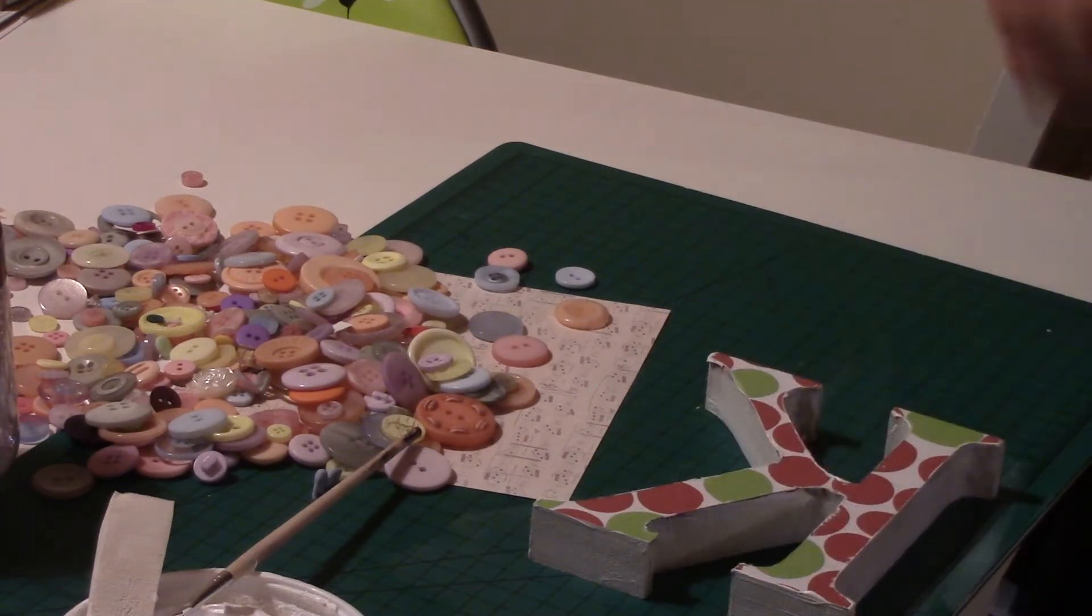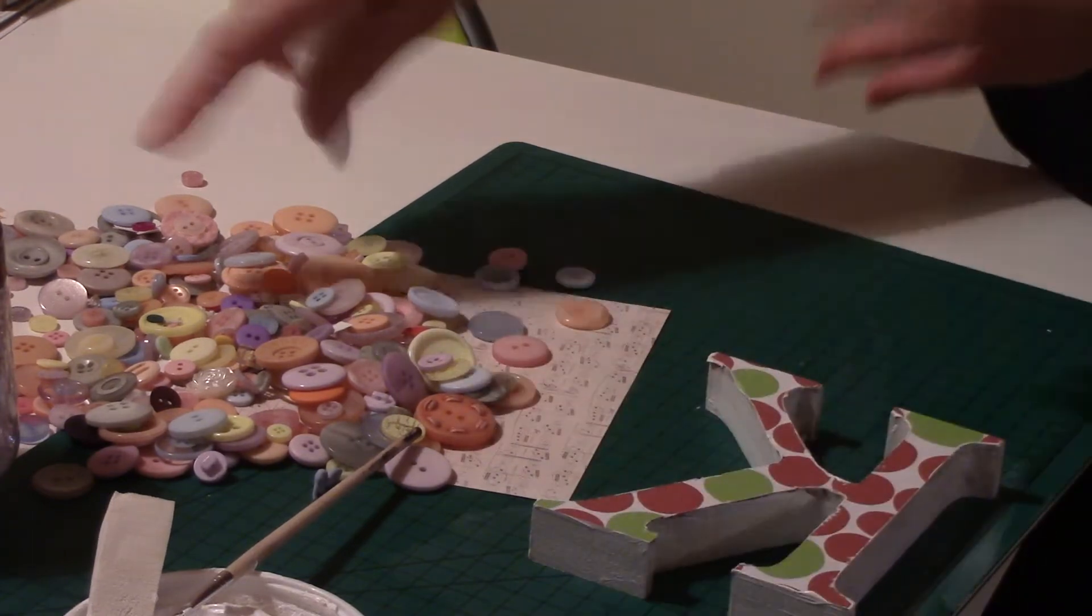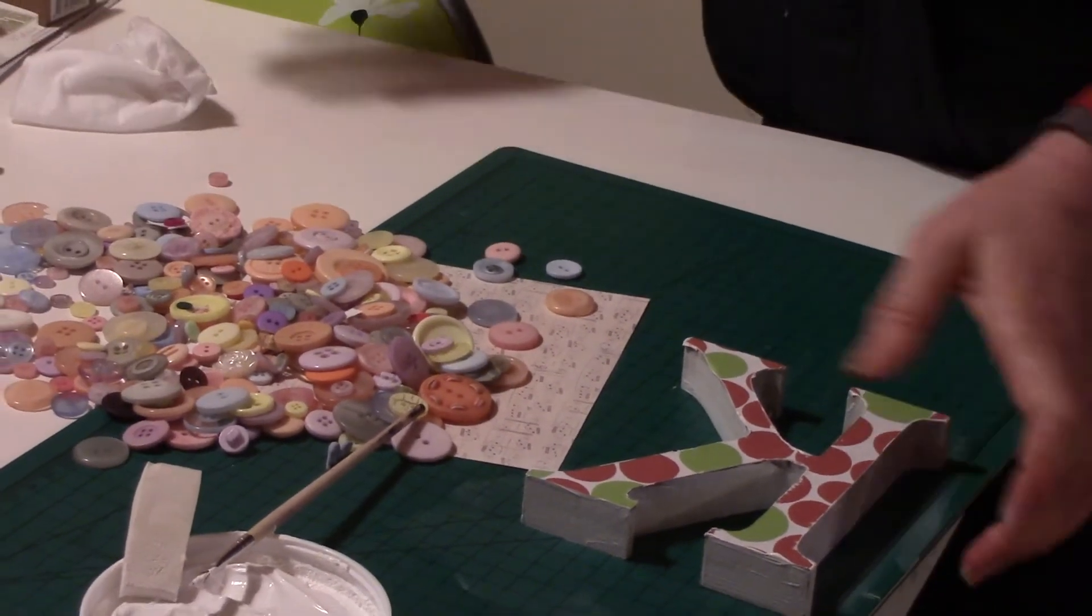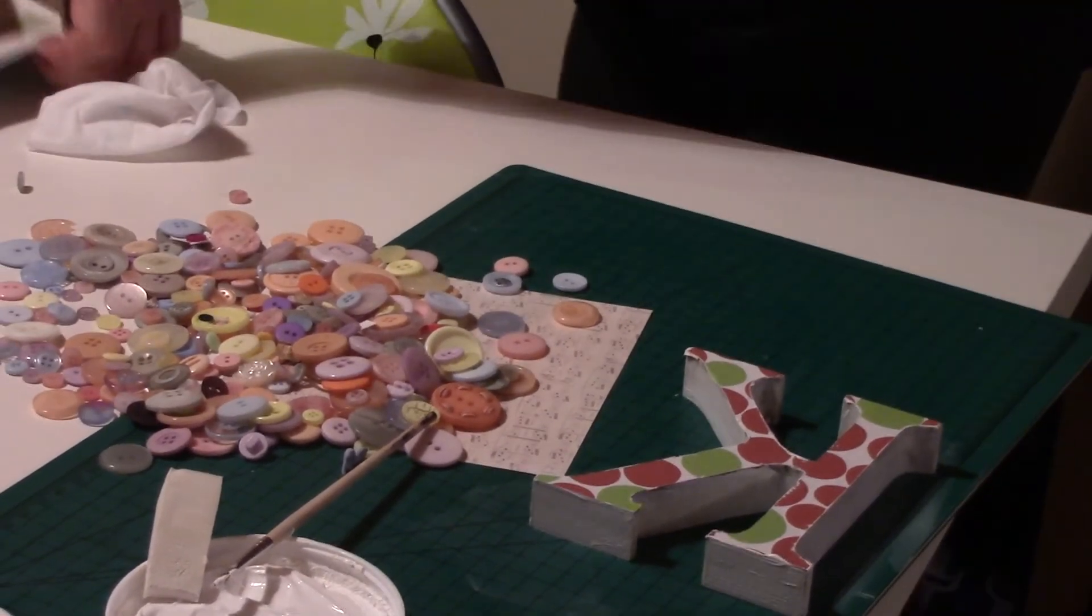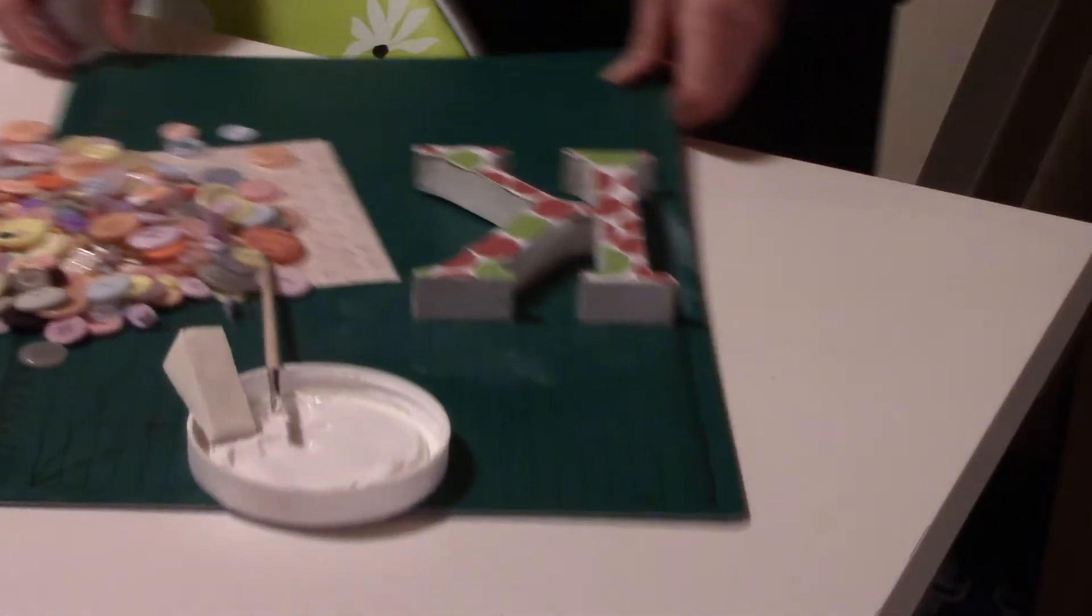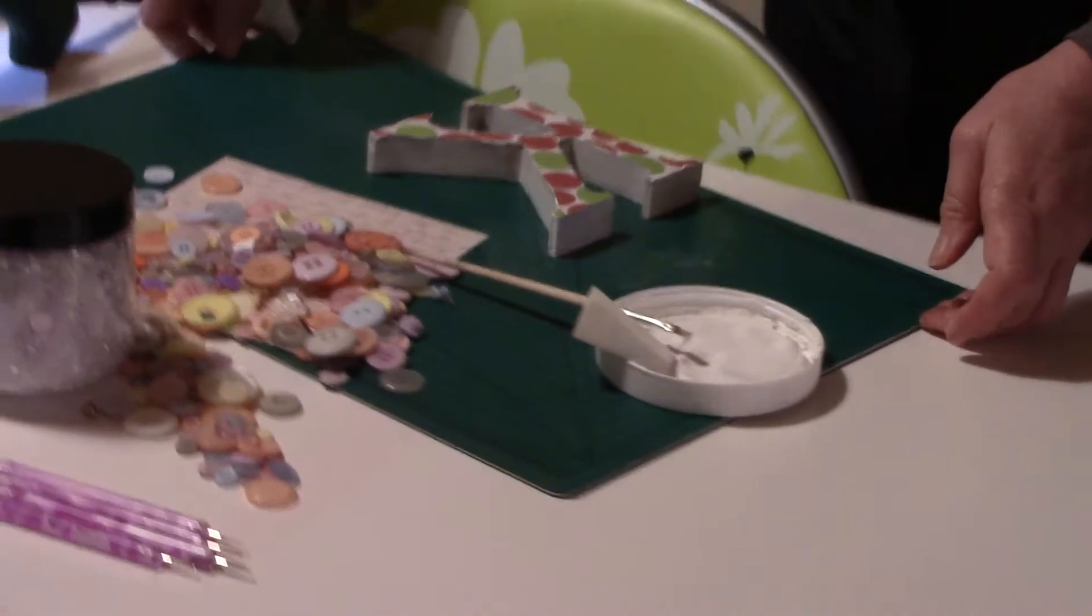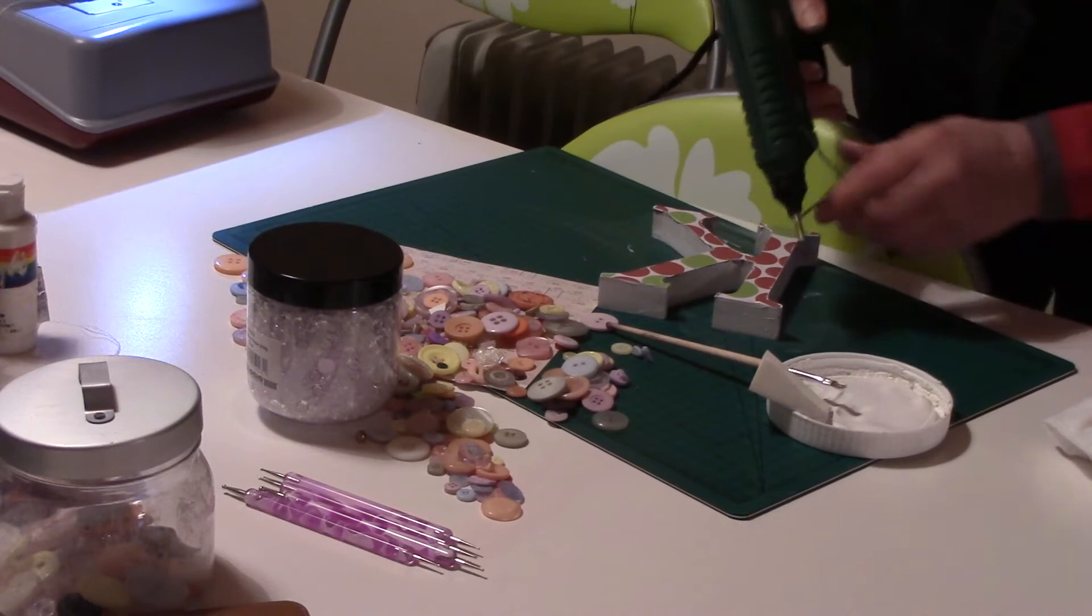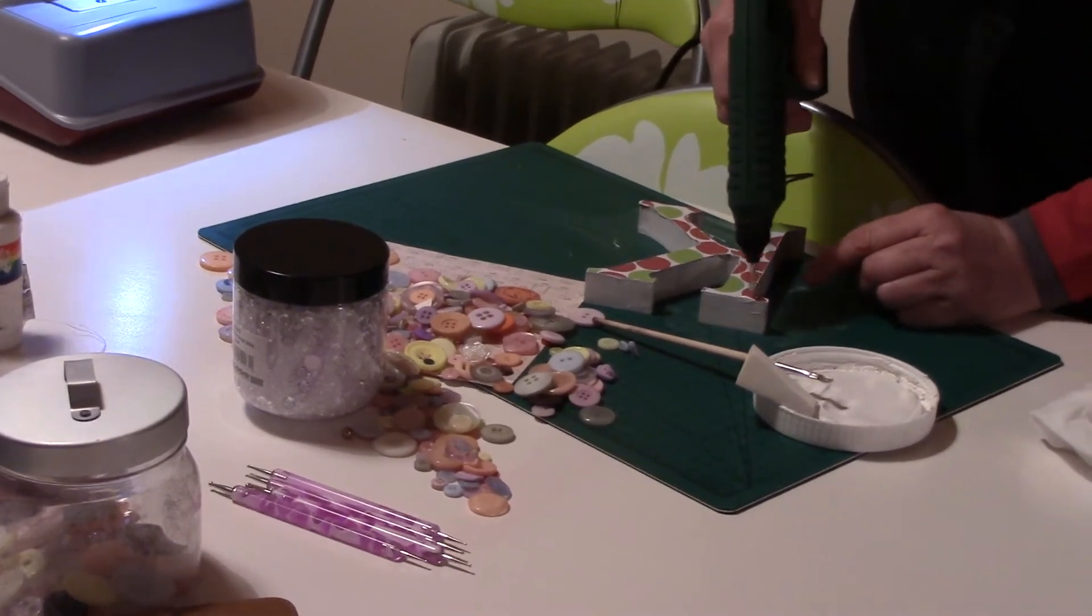And what I'm doing is I'm going to cover the whole K using a variety of buttons that I have here. And I think again the best way is to use the glue gun and bring this over near my glue gun and begin to work in one area at a time.